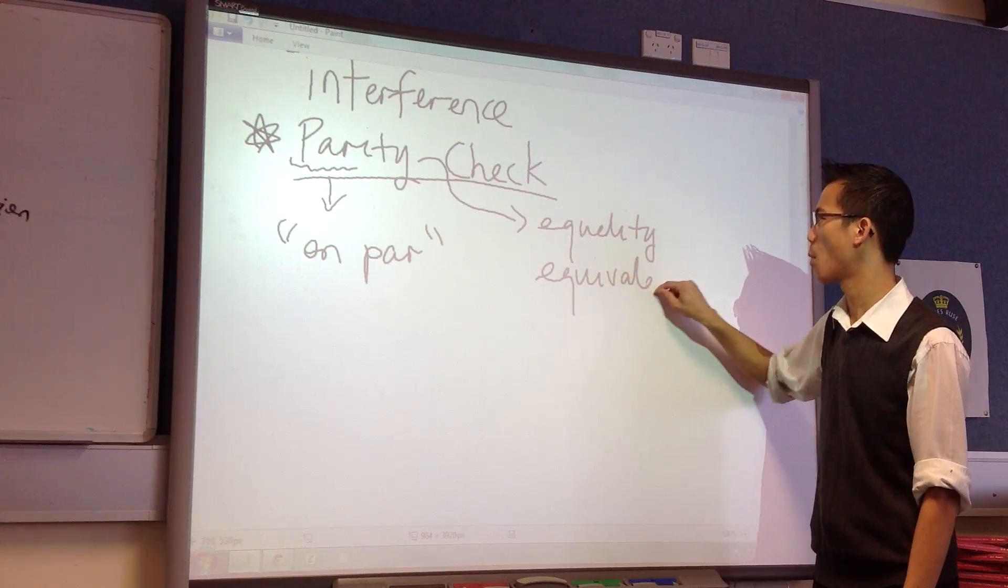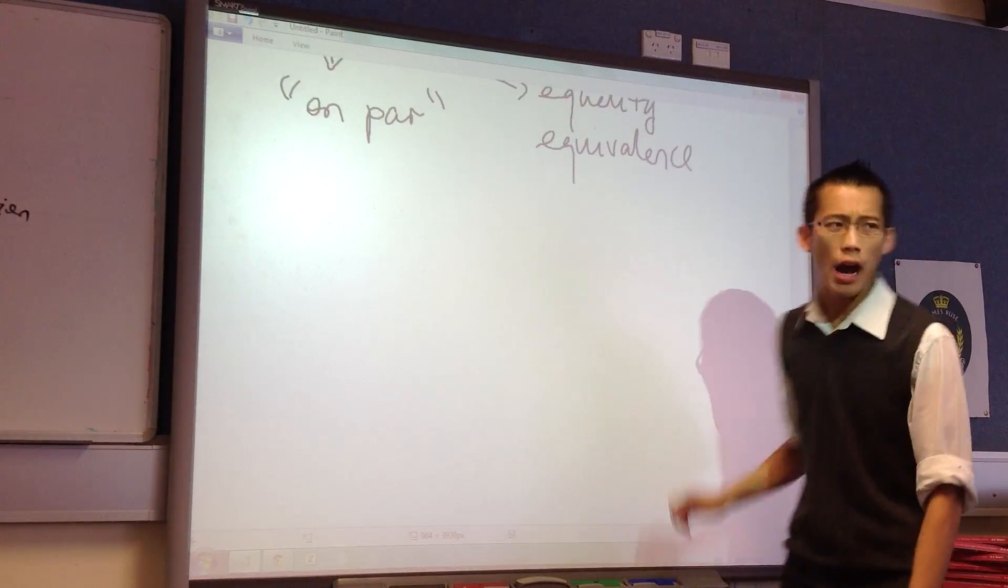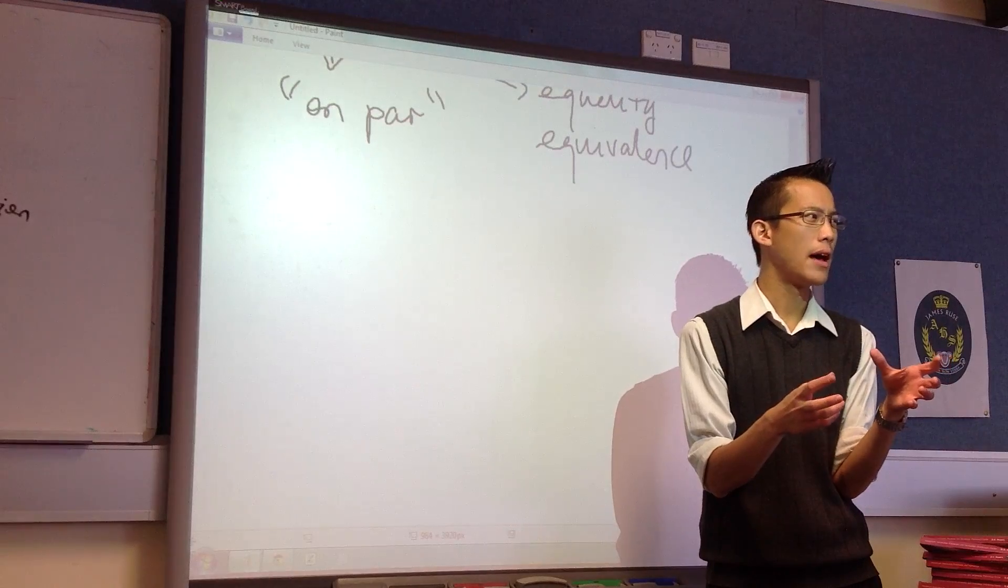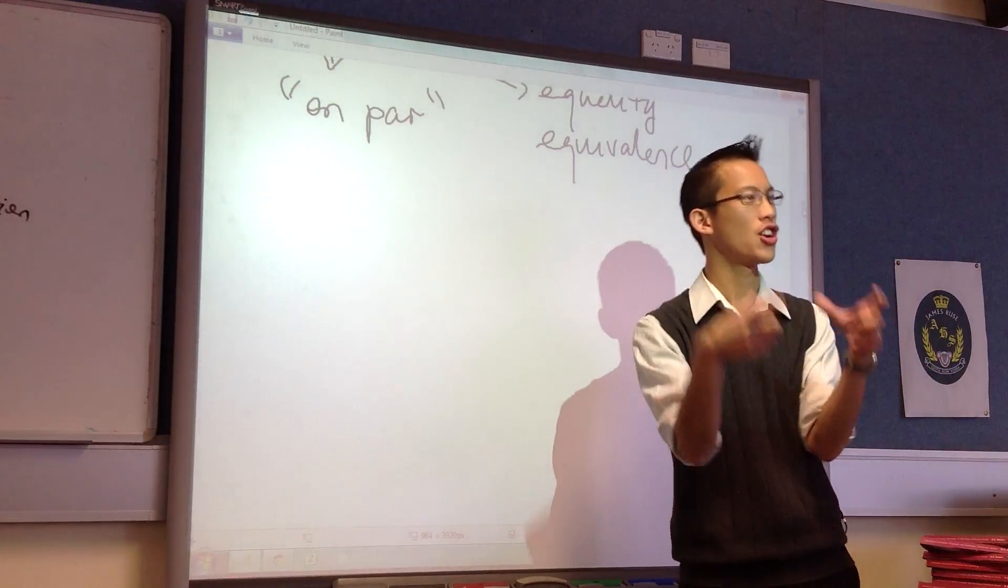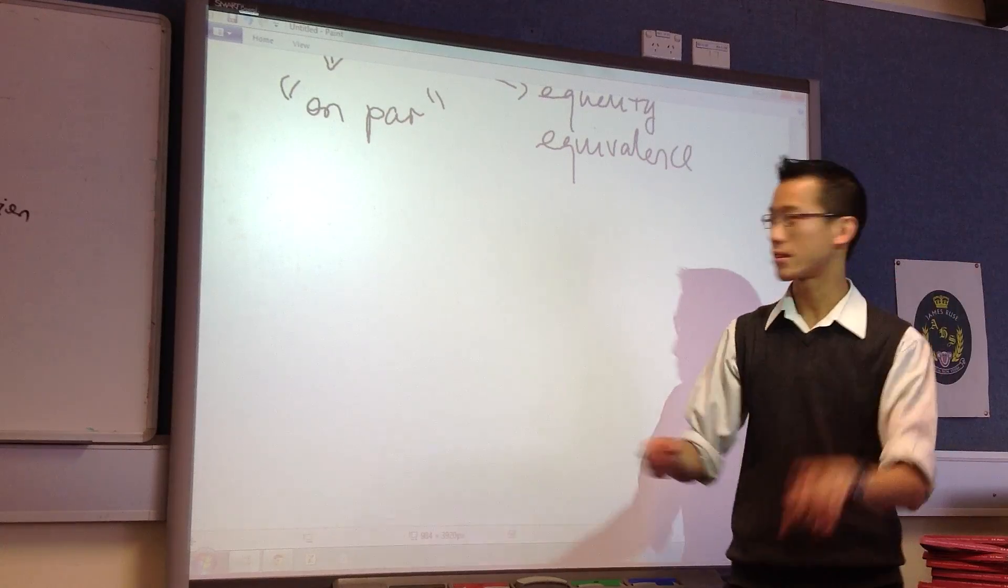Parity is really just a fancy word for equality. Or if you like, equivalence. Equivalence, as you'll see, is probably a better term to go for it. So how does this work? You remember on a network, we send data, and we send it in little discrete chunks. Do you remember what they were called? It starts with a P. Packets, correct.